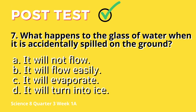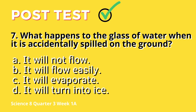Question 7: What happens to the glass of water when it is accidentally spilled on the ground? A. It will not flow. B. It will flow easily. C. It will evaporate. D. It will turn into ice.